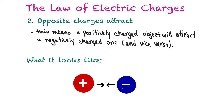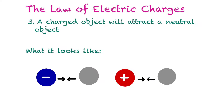The second point states that opposite charges attract, so a positively charged object will attract a negatively charged one and vice versa. The third point states that a charged object will attract a neutral object — a negatively charged object attracts a neutral one, and a positively charged object also attracts a neutral object.